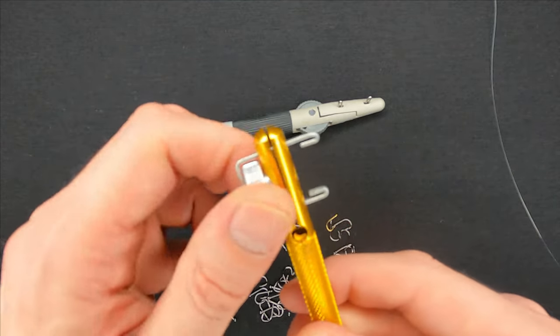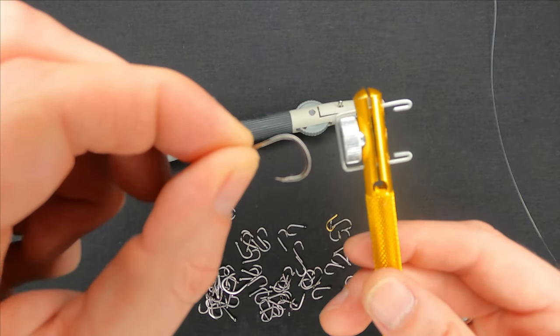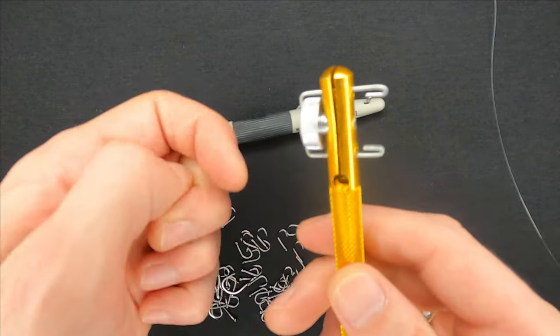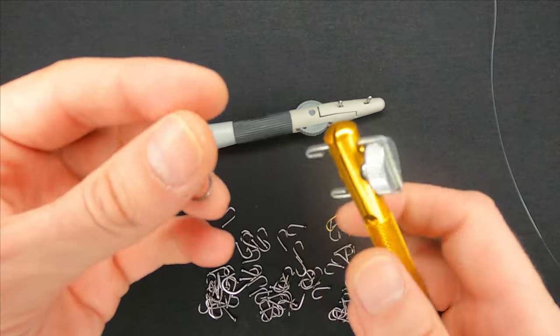Let me quickly do a demonstration of how easy it is to tie hooks with it. First off, you need to release the jaws with the assistance of this wheel and put the hook between them.